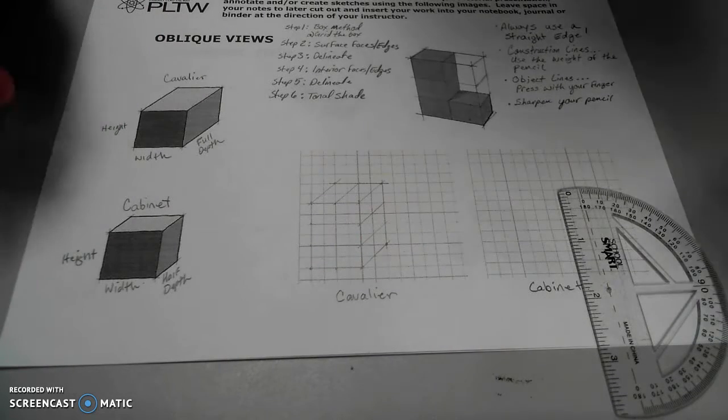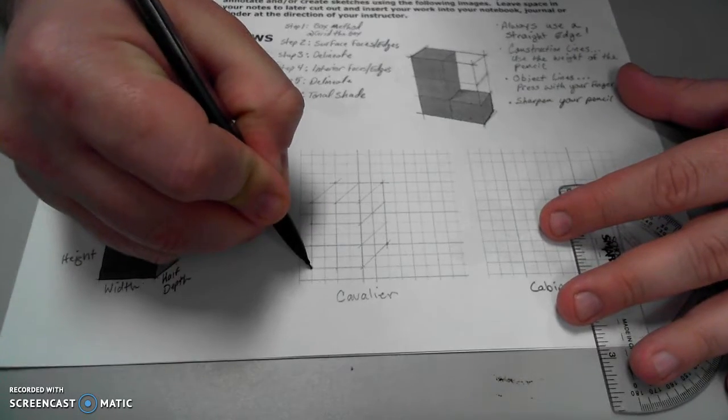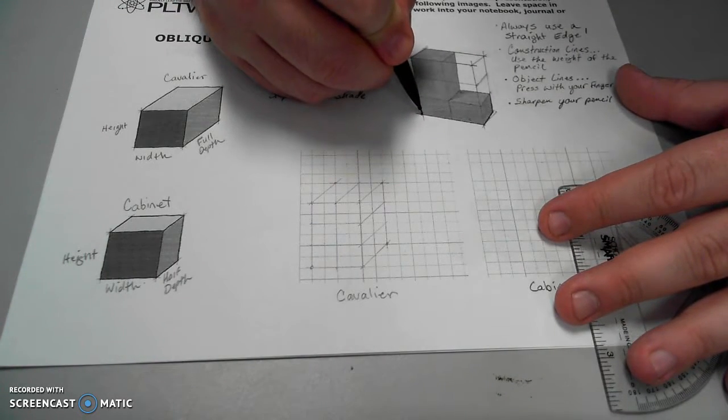I need to identify what my surface edges are so that I can find the faces. Again, I'll start in this corner, which is right here on my object.